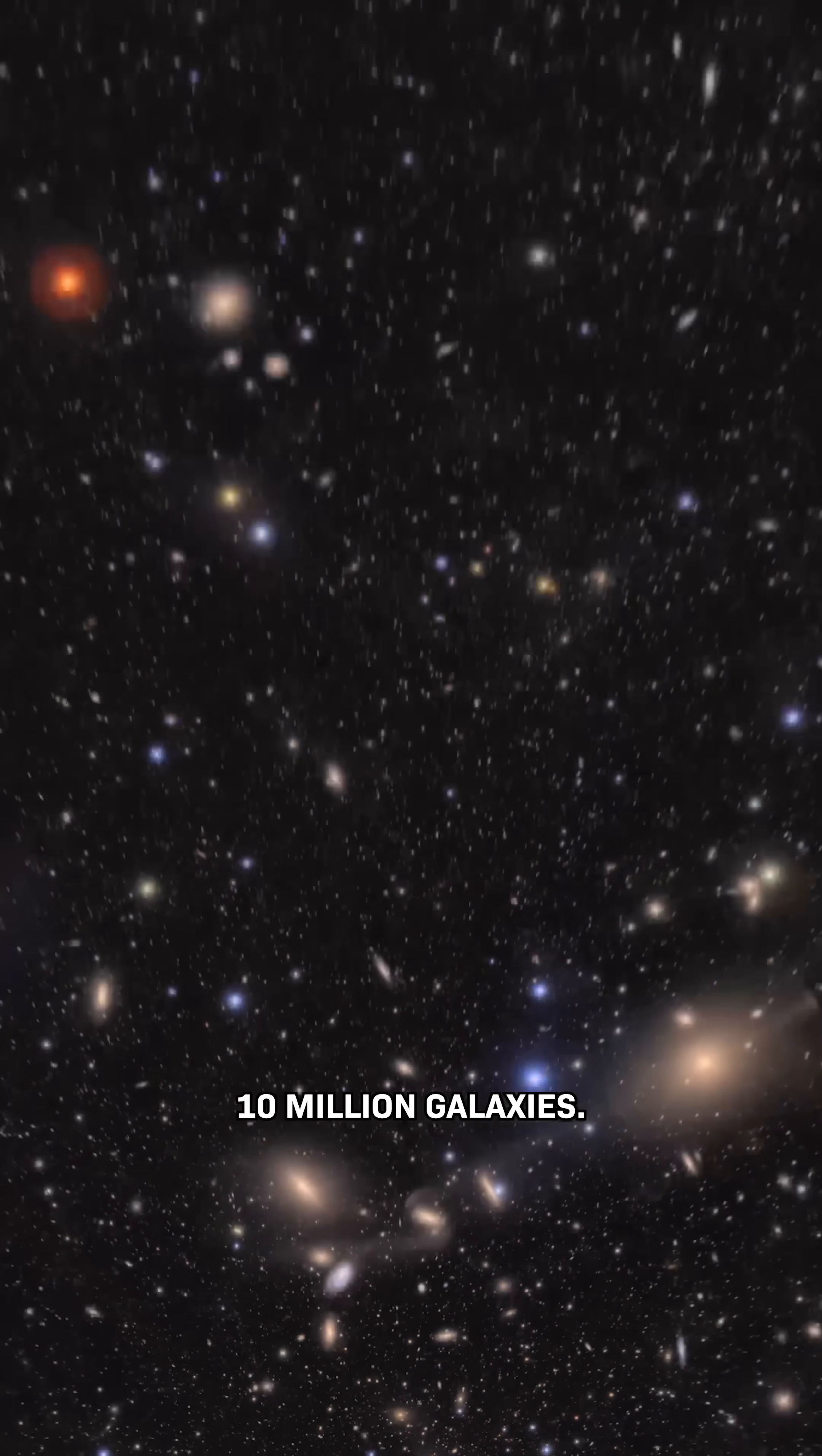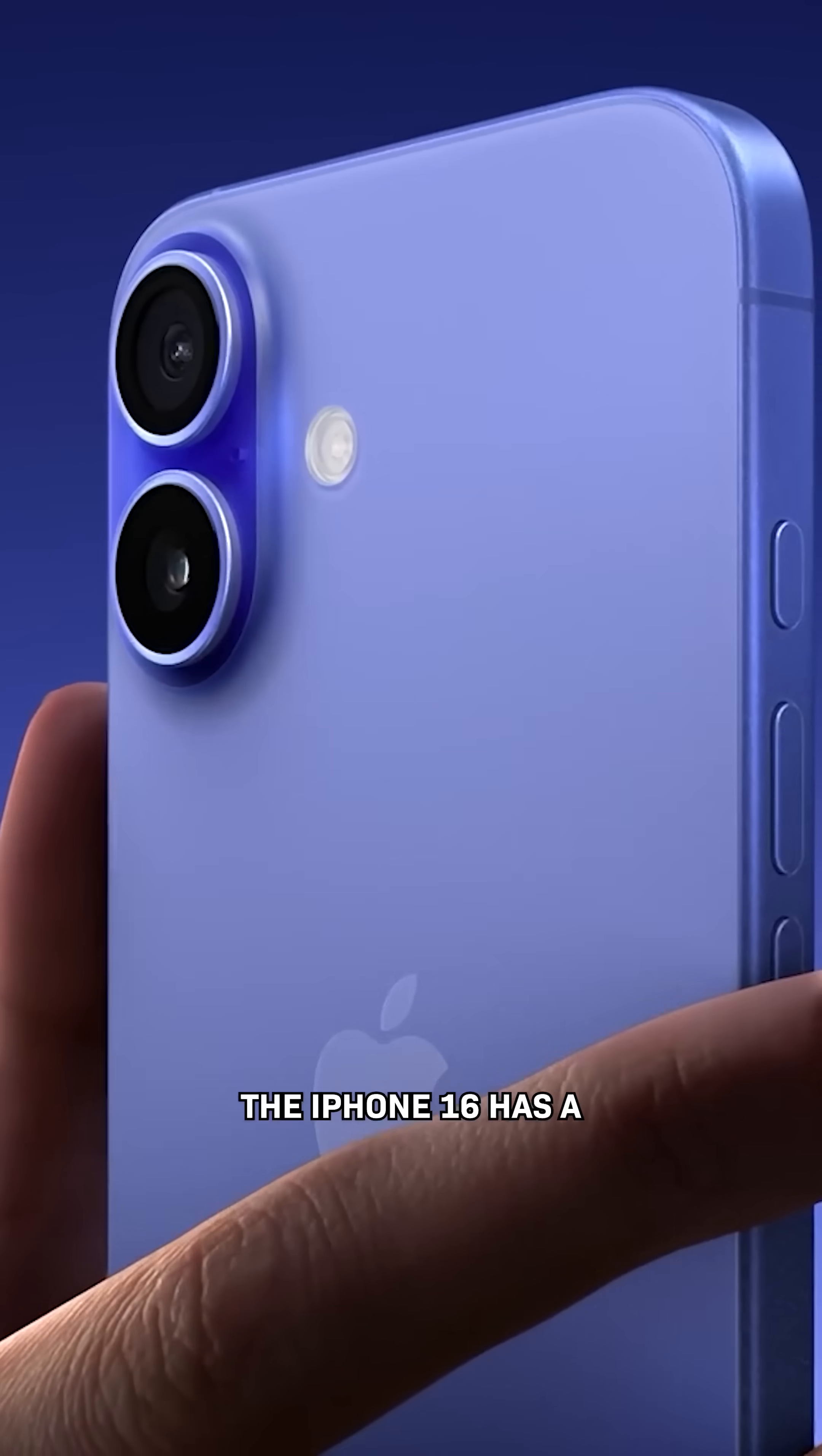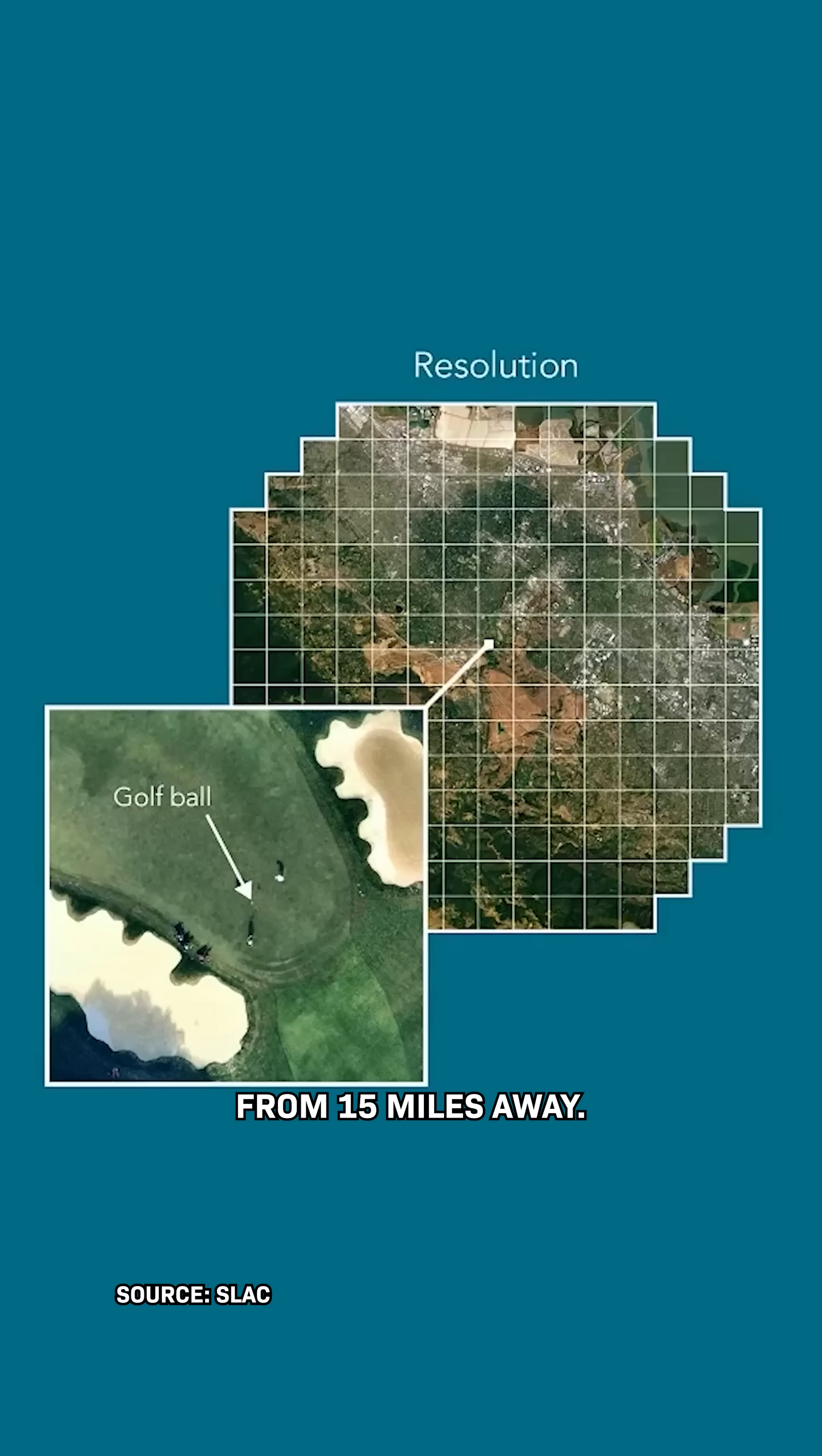And it captured 10 million galaxies. This camera is the size of a small car. Its sensor is 3,200 megapixels. For context, the iPhone 16 has a 48-megapixel camera. It can spot a golf ball from 15 miles away.